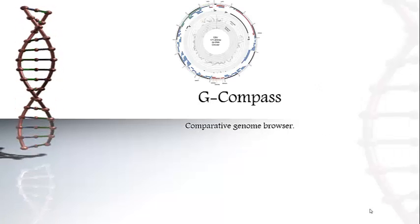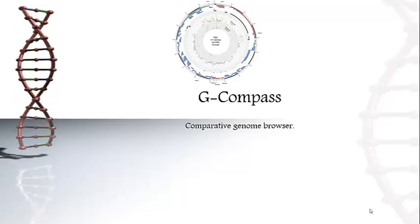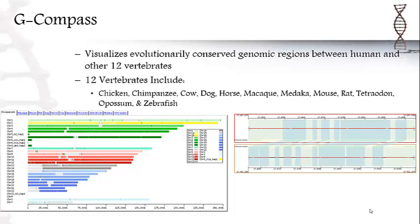G-Compass is the next tool we are going to briefly look at. Just like other tools, G-Compass compares organisms with each other, particularly their evolutionary conserved genomic regions.